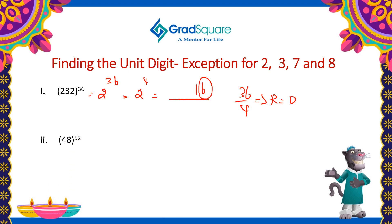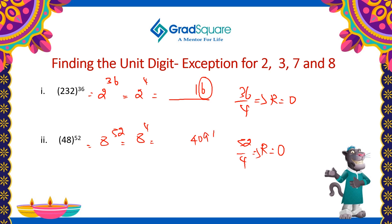Similarly, when 8 is raised to the power 52, the cyclicity of 8 is 4. 52 divided by 4 gives a remainder of 0. When the remainder is 0, it must be replaced by 4. So this is equal to 8 power 4, which is equal to 4096. The unit digit of the resultant will be 6.